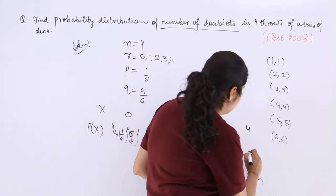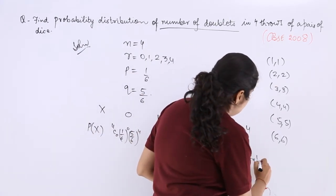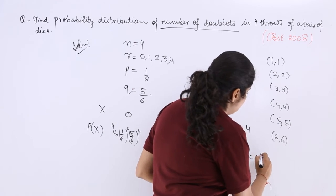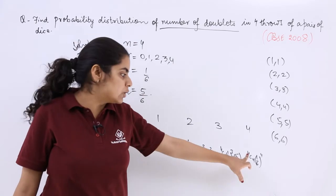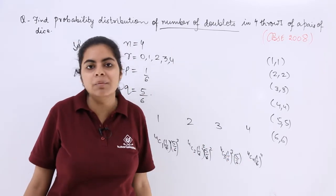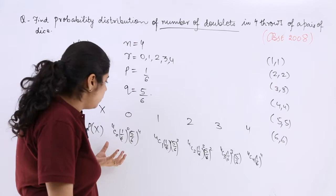Last but not the least, nCr P raised to the power r Q raised to the power n minus r. I am just vanishing because 4 minus 4 will give me 0 in the power. Anything raised to the power 0 is 1.